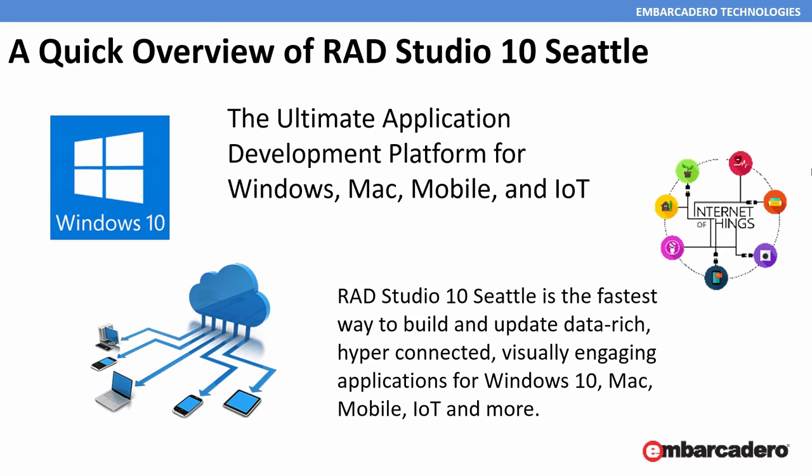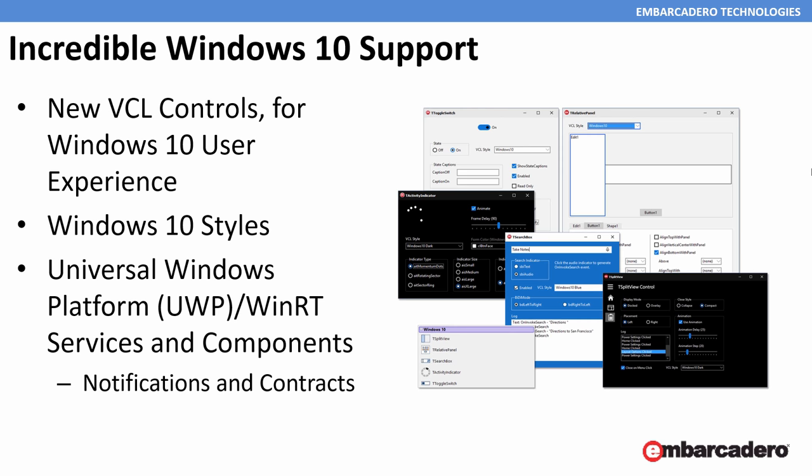RAD Studio 10 Seattle was released last fall, and since then we've released a major update as well as hot fixes to allow you to build great applications for Windows, Mac, iOS, Android, and the Internet of Things. With the release of RAD Studio 10 Seattle, we've added support for the new Windows 10 operating system, as well as allowing you to add the Windows 10 user experience in your existing VCL applications that will run on Windows 7, Windows 8, and Windows 10. We've also added new custom Windows 10 styles and full access to the Universal Windows Platform and WinRT services and components.